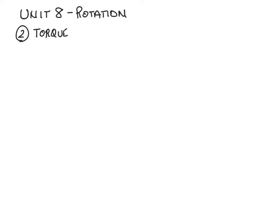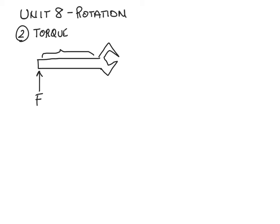The second component of rotation largely involves torque. To describe how torque works, we're going to throw down a quick crescent wrench. In order to loosen or tighten a lug nut, we'll apply a force over a given amount of distance to this object. We have thus produced a torque. Torque is equal to force times distance.